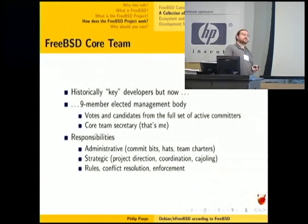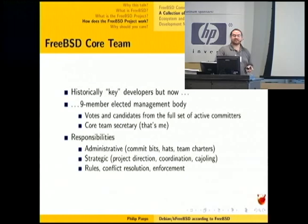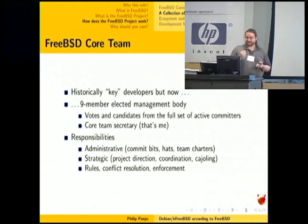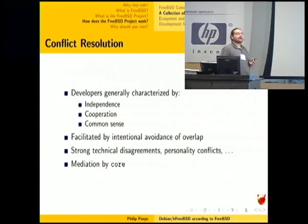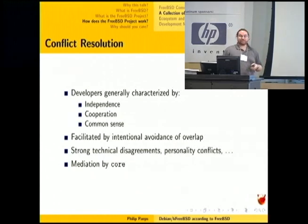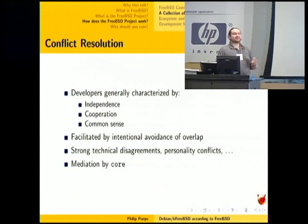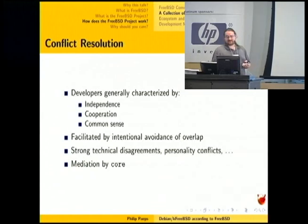The core team has administrative responsibilities — we approve new commit bits and bless hats, deciding who can have root on a machine. The core team also has a strategic role: we guide roughly where the FreeBSD project should be going. Sometimes the FreeBSD core team secretary gets sent to a Debian conference to talk about Debian KFreeBSD and put people into action — which is what I'm doing now. The main thing the core team does is resolve conflicts. If you put 50 cats in a room, you're going to have 50 cats fighting. Most FreeBSD developers are fiercely independent people with vastly different opinions, so sometimes this explodes into a flame war and the core team mediates it in a gentle, quiet way.